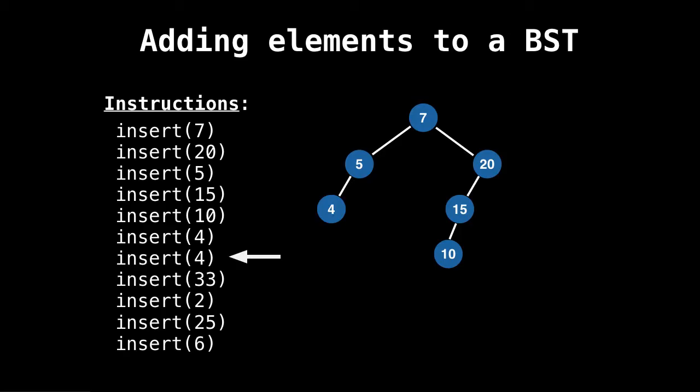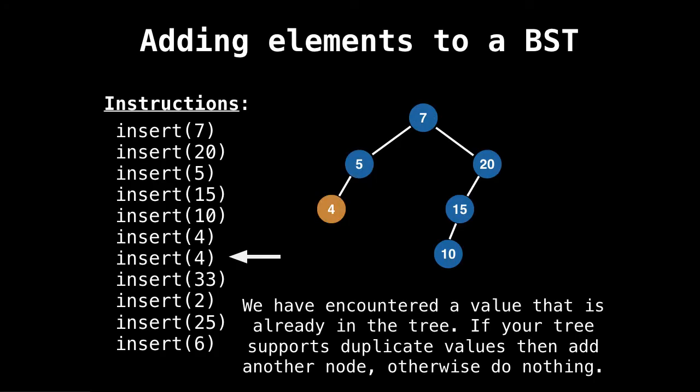Now we have four again, so let's see what happens here. So we start at seven, move to the left, move to the left, now we've encountered a value that already exists in our tree. So as I said before, if your tree supports duplicate values, now's the time to add another node. And you would either pick by convention if you want it on the left or on the right, otherwise you'd do nothing, and I'm going to choose to do nothing.